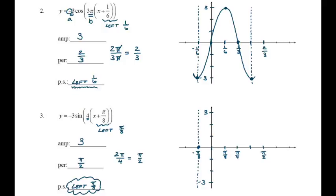For this sine function, sine starts at the midline and goes up or down first depending on whether the coefficient is negative. Because the coefficient is negative here, the function goes down first, then up through the midline, and finishes back at the midline. I graph a point at the beginning and end of the period, mark where sine crosses the midline in the middle, and place the minimum between those crossings since the coefficient is negative. Connecting these dots gives one period of the graph.